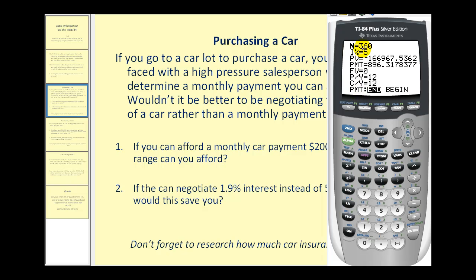N represents the total number of compounds for the loan. I is the interest rate. Present value represents the loan amount. PMT represents the monthly payment. Future value would be zero when the loan is paid off. PY represents the payments per year, and CY represents the compounds per year, and our payments are either at the end or the beginning of each month.